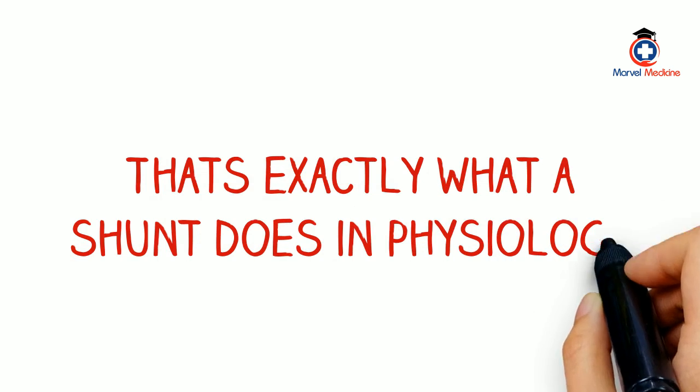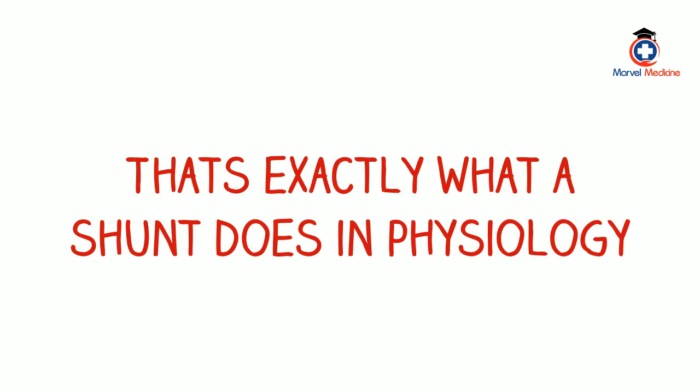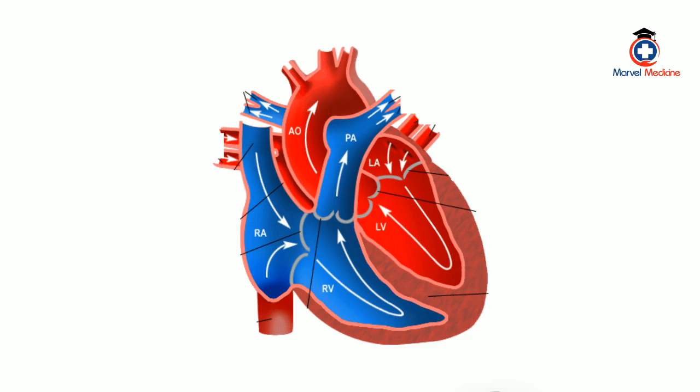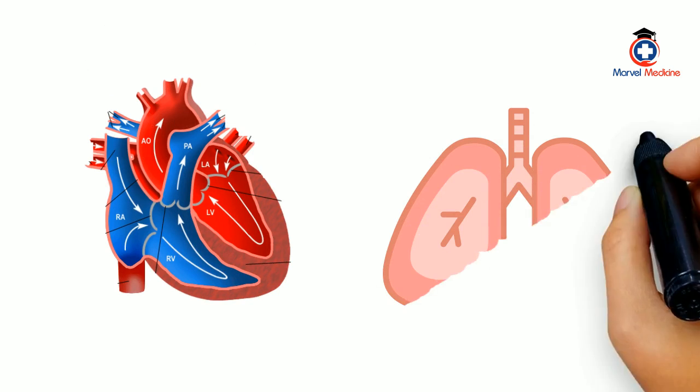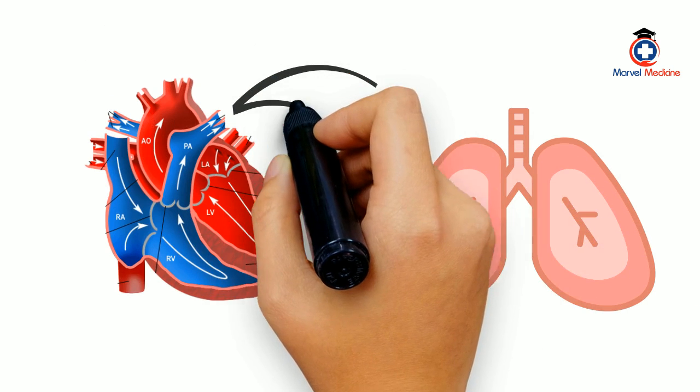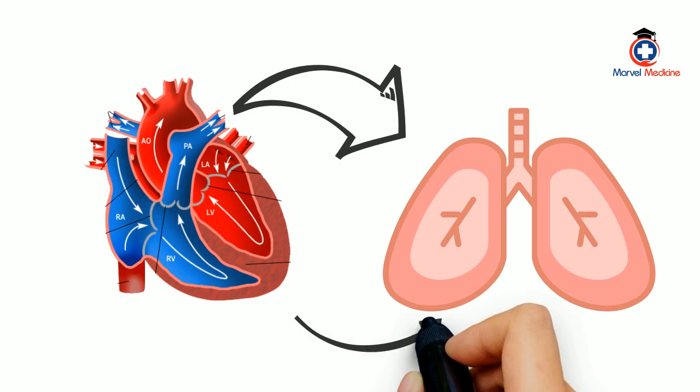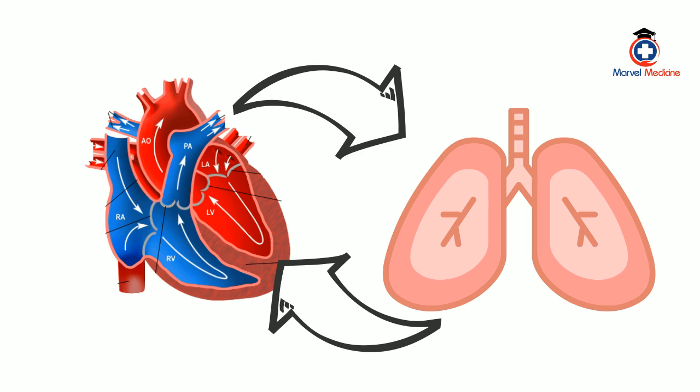That's exactly what a shunt does in physiology. Let's visualize and look at the heart and lungs. We know that deoxygenated blood comes to the right side of the heart. Once there, it goes to the pulmonary artery, to the lungs. In the lungs, it picks up oxygen and then returns back to the left side of the heart, to the left atrium, to the left ventricle, which then goes to the aorta and the rest of the body.